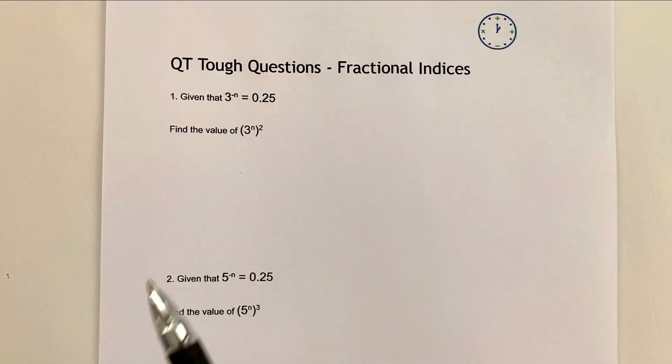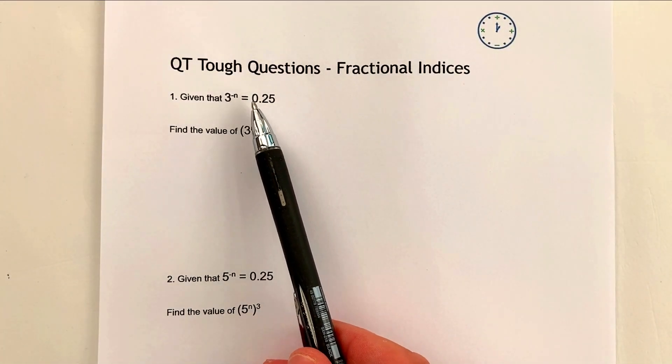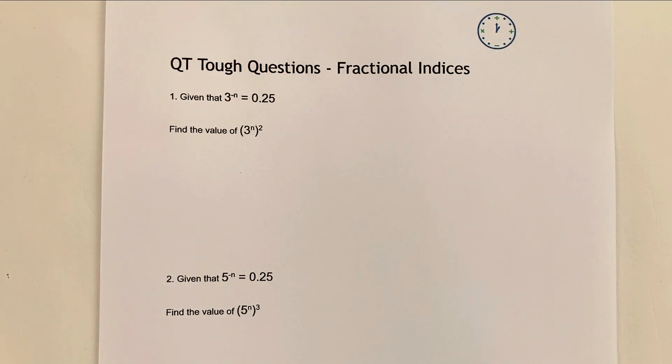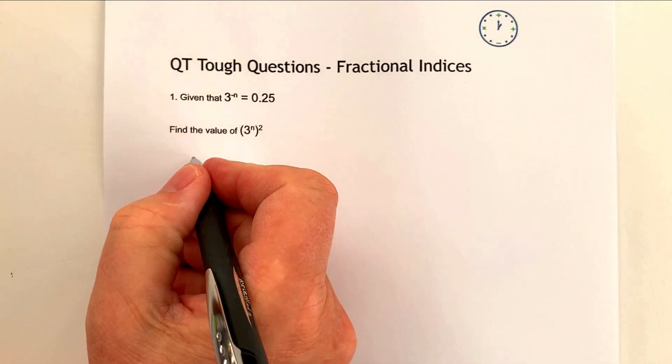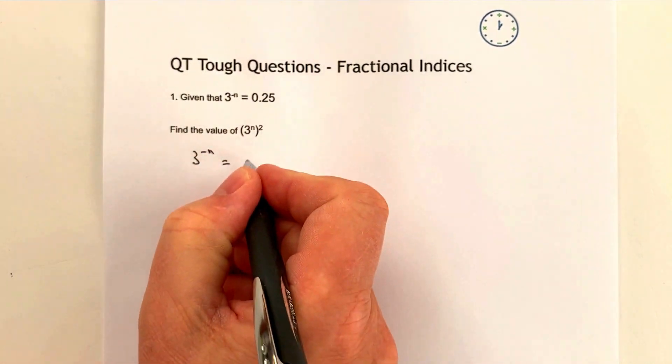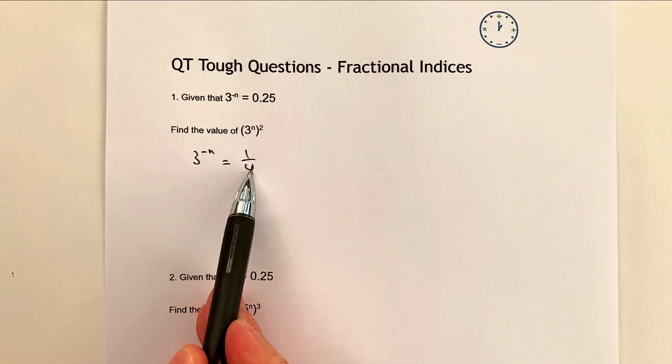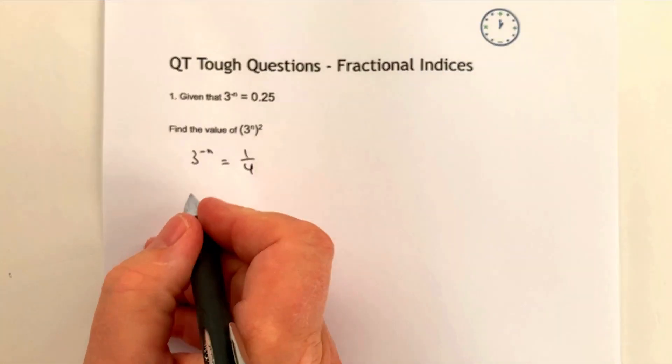Okay, so in the question we're given that 3 to the power of negative n equals 0.25. So what we need to do is convert that firstly to something we can work with. We can rewrite this as 3 to the power of minus n equals 1 quarter. Now that's the negative reciprocal, so therefore we can actually write that as 3 to the power of n equals 4.